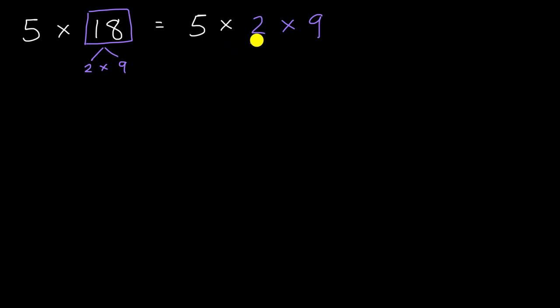Well, instead of multiplying the 2 × 9 first to get the 18 and then multiplying that by 5, what we could do is we could multiply the 5 × 2 first. And you might be thinking, wait, hold on a second.